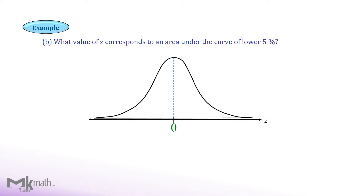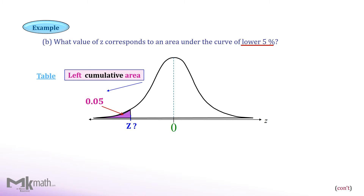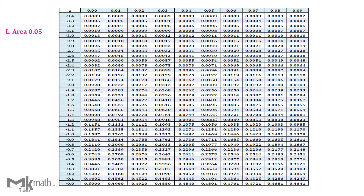Let's take a look at another example. First, find the given area in the question. It says lower 5%. So we use the left-tailed area of 5% or 0.05. Therefore, we find the z-score that corresponds to the left cumulative area of 0.05. We need to locate the left cumulative area of 0.05 or close to 0.05 from the inside of the table.